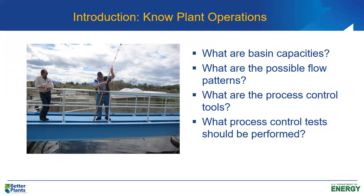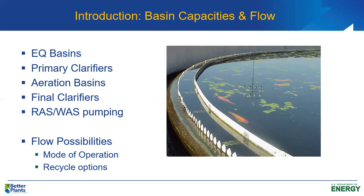There are a number of tests we can use to give us data about how the activated sludge process is performing. Those tests are absolutely critical because they give us the information to help us make decisions about process control. We need to know basin capacities and flow rates. If we have EQ basins — most municipal wastewater treatment plants in the United States do not — that's a disadvantage in that when we have high hydraulic loadings, we don't have a way to smooth them out. But if we do have EQ basins, that gives us capability to handle high hydraulic loadings.